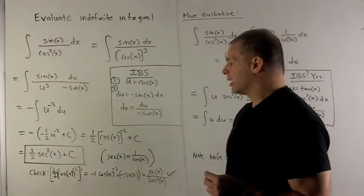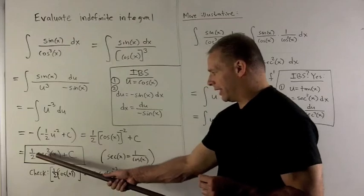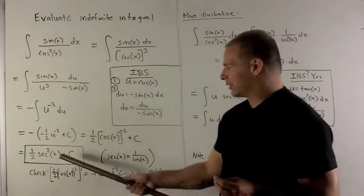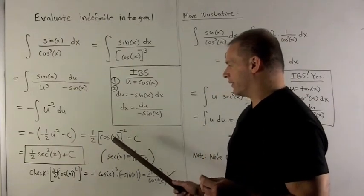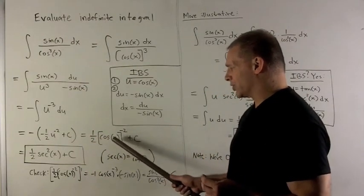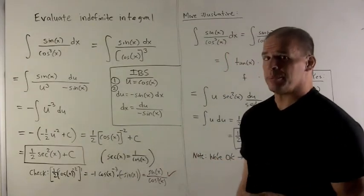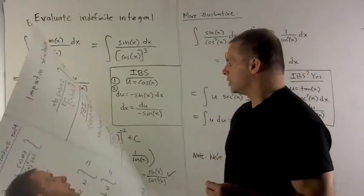To check, I take the derivative of this and make sure it agrees with the original. Now, I won't take the derivative of this. I'll actually take the derivative of the 1 half cosine x to the minus 2 because we got from here to here just by an identity, which we're hoping we used right.